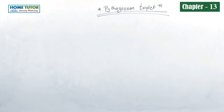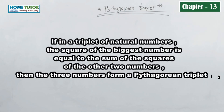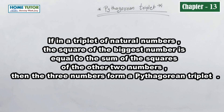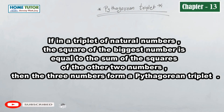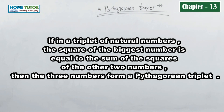The next topic is Pythagorean triplet. The rule says: if in a triplet of natural numbers, the square of the biggest number is equal to the sum of the squares of the other two numbers, then the three numbers form a Pythagorean triplet.